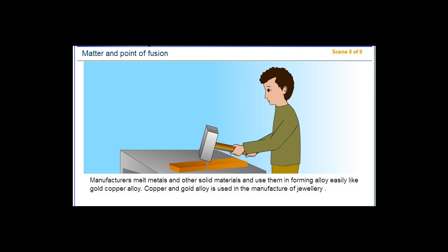Manufacturers melt metals and other solid materials and use them in forming alloys easily, like gold-copper alloy. Copper and gold alloy is used in the manufacture of jewelry.